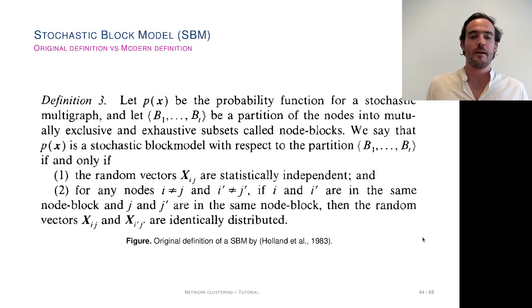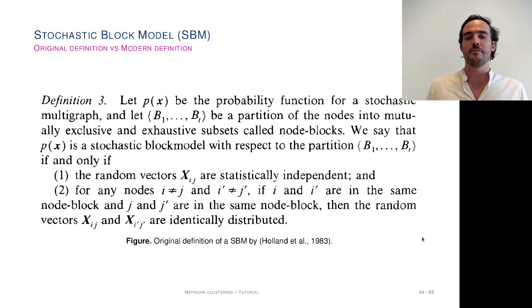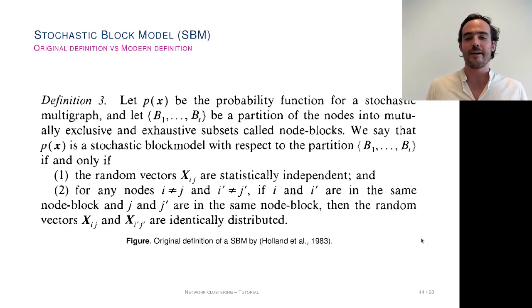P(x) will be a stochastic block model with respect to this partition if and only if two conditions hold: the random vectors x_ij representing the interaction between node i and node j are independent, and for any nodes i, j and i', j' — if i and i' are in the same block and j and j' are in the same block — then the vectors x_ij and x_i'j' are identically distributed.